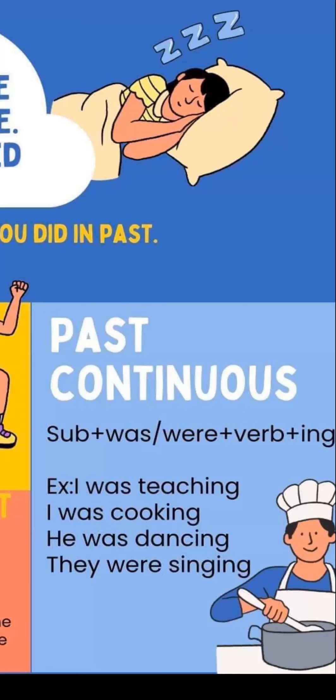Our present continuous structure is: Subject + am/is/are + V-ing. For past continuous, am/is/are change to their past forms — 'was' for singular and 'were' for plural.